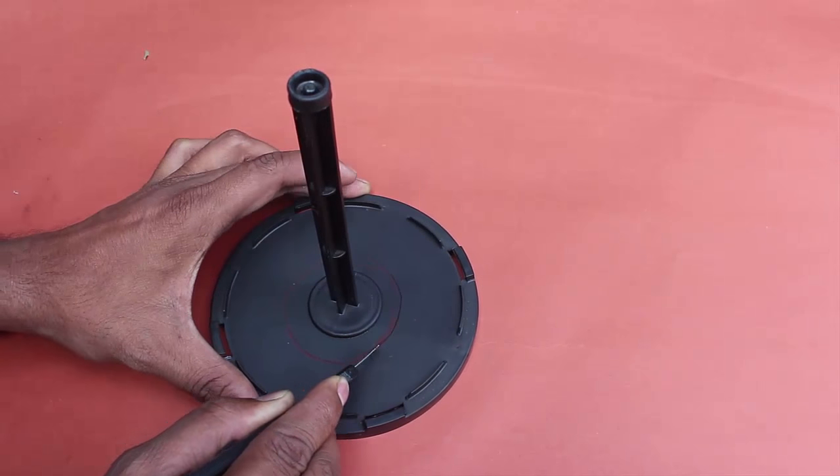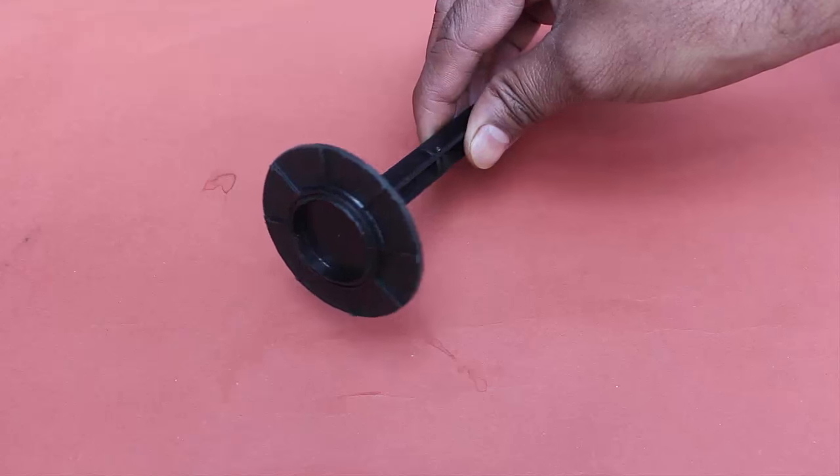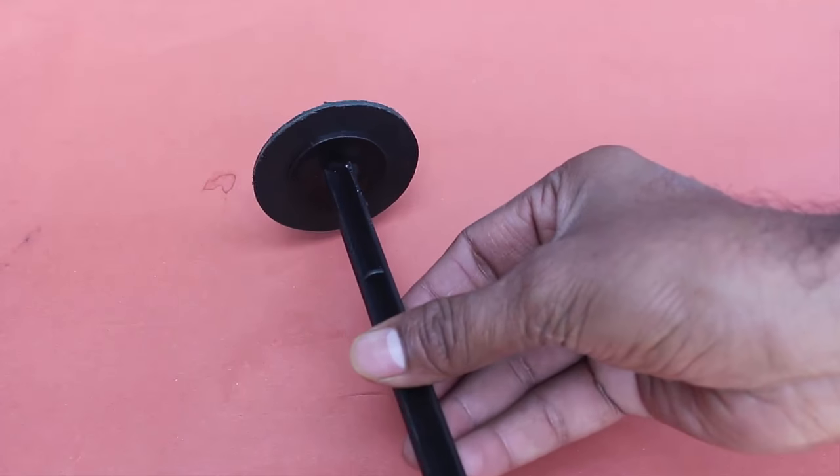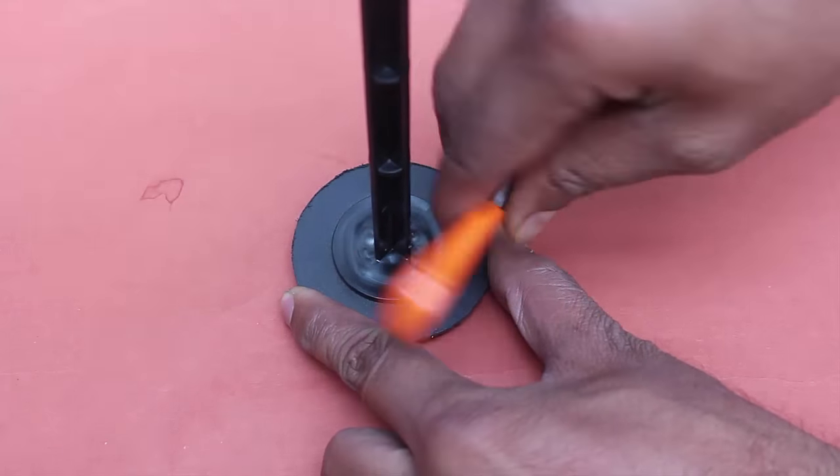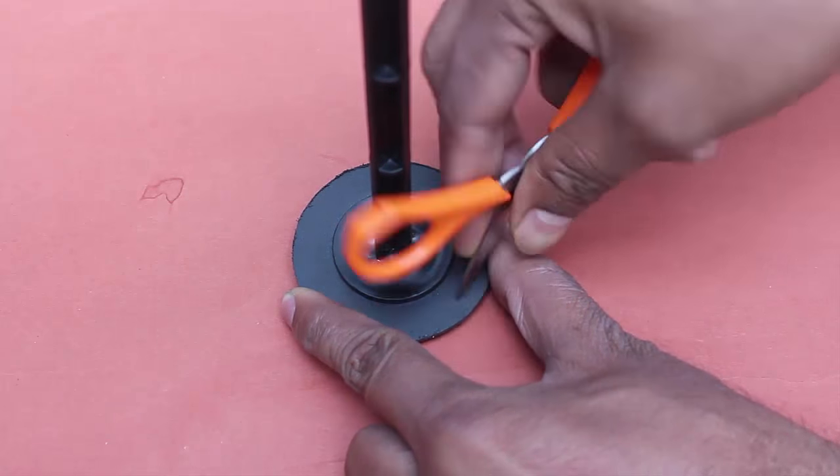The base will become the piston of the bottle and the long stick will become the plunger. This is the piston plunger assembly.